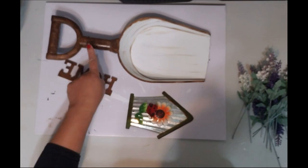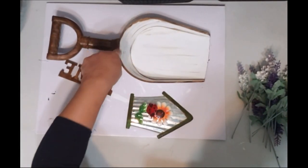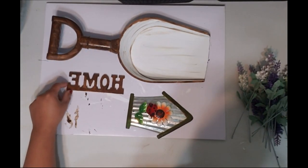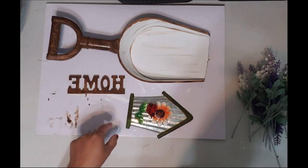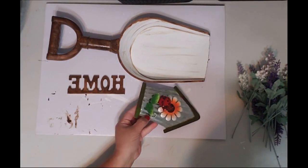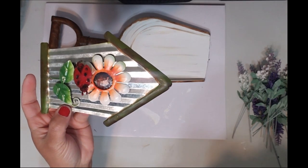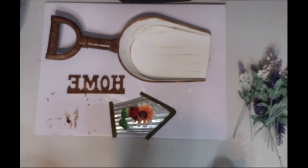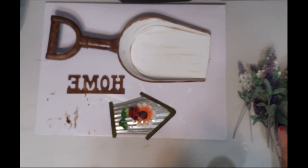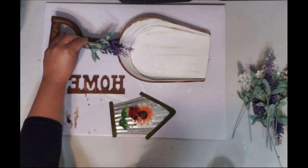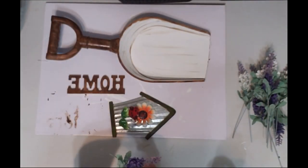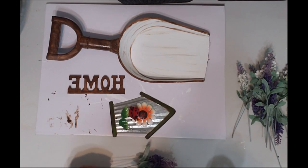Alright guys, so I went ahead and painted the handle and I painted the inside with the brown. I went ahead and painted the 'home' in the antique brown as well and then I just kind of brushed over the little house. I'm just going to place it and see how it looks, but right now what I'm going to do is try to see how much of the flowers I need.